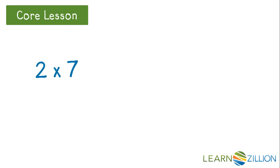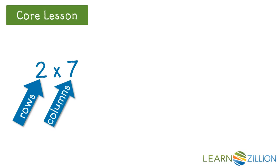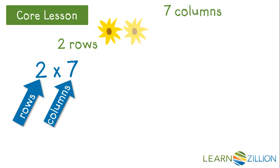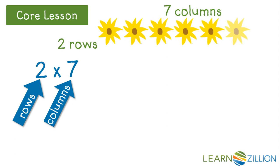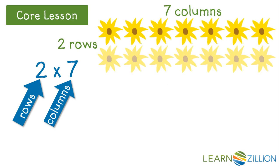What would the array look like for the expression two times seven? The first number in a multiplication expression shows the rows — there are two rows. The second number shows the columns, so there are seven columns. Two rows and seven columns. Here's one row of seven flowers, and a second row of seven flowers.